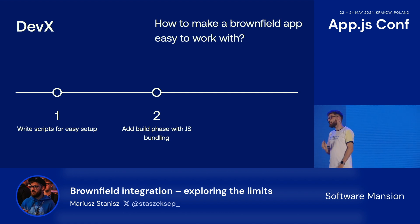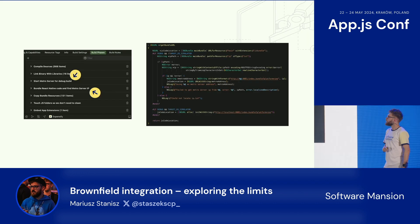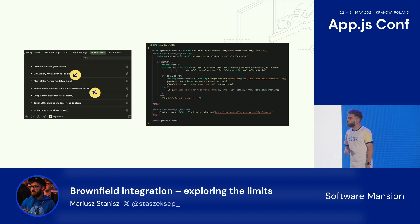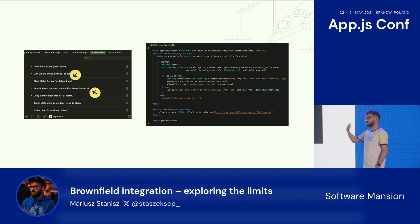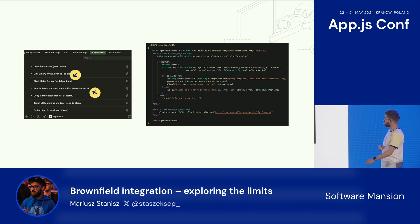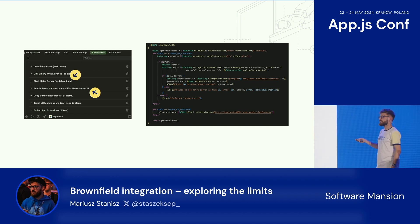Second tip: add a build phase with JS bundling. This was mostly an iOS problem — Android worked quite well, surprisingly. On iOS we had to add build phases with bundling JS to avoid doing it manually all the time. Also, my colleague Mateusz wrote a function that finds the IP of the Metro bundler to connect it to a physical device automatically, so we didn't have to think about bundling all the time.